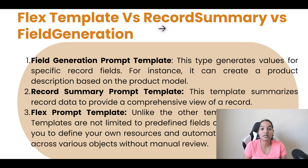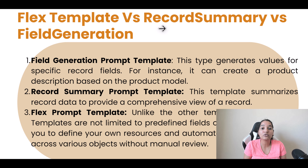The best example is creating a newsletter. A newsletter uses information from various data points across various objects. Those objects may be related to each other or may not be related, but you're creating a newsletter using all that information. So in that case, you're going to use a flex template.